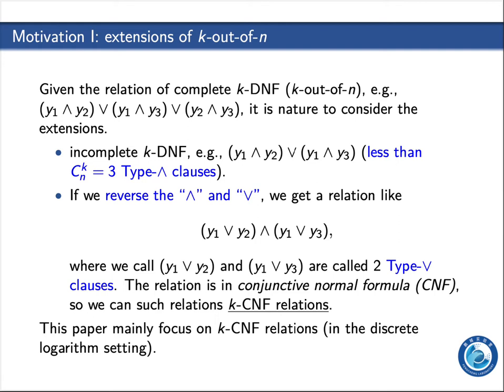The first extension is incomplete KDF relations, where the number of crosses is less than the binomial coefficient K-out-of-M. Secondly, if we reverse the symbols of logic-and and logic-or, we get a relation in conjunctive normal form, so we call such relations K-CNF relations. This paper mainly focuses on K-CNF relations in the discrete logarithm setting.